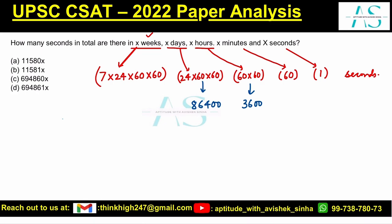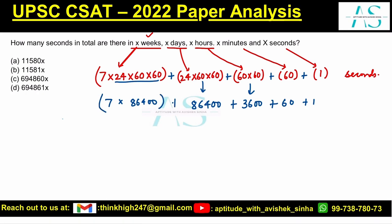Alright, aap dekho — 86,400, aur yeh saare values aapas mein add hone waale hain. So: 86,400 plus 3,600 plus 3,600 plus 60 plus 1 — last mein one add ho raha hai. Aur kyunki yahan pe mujhe yeh mil raha hai: 86,400 into seven.